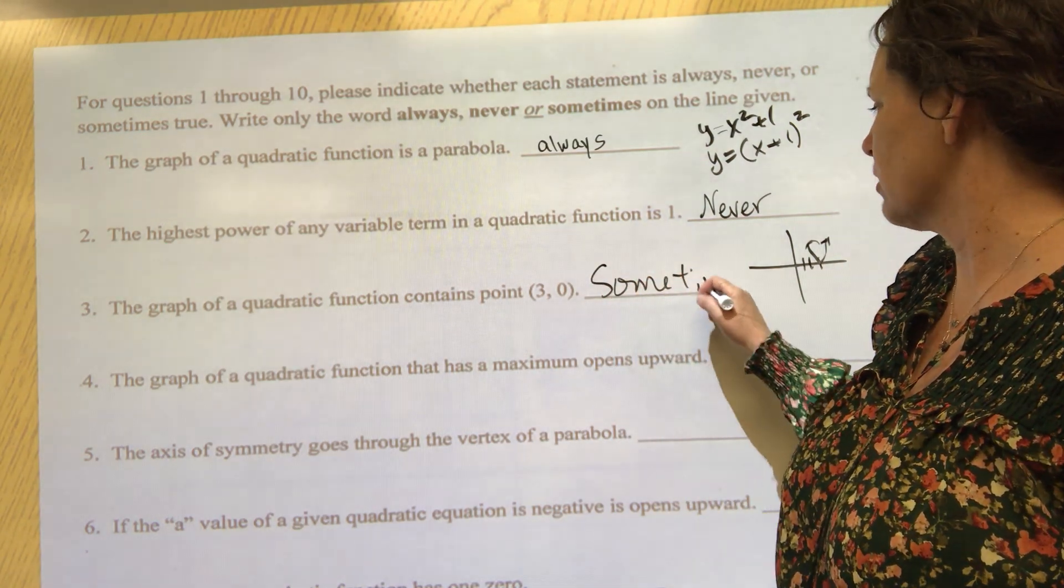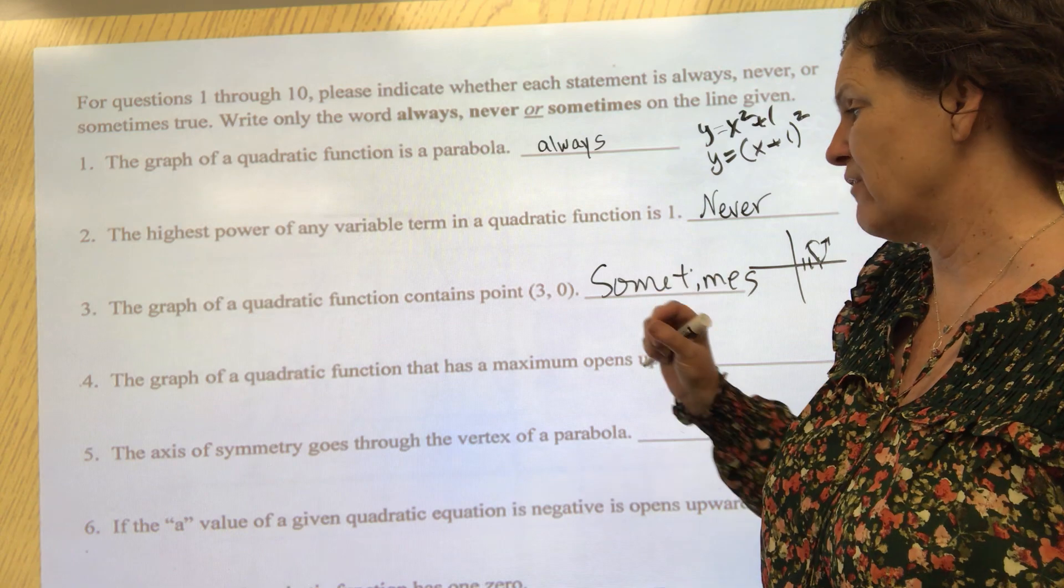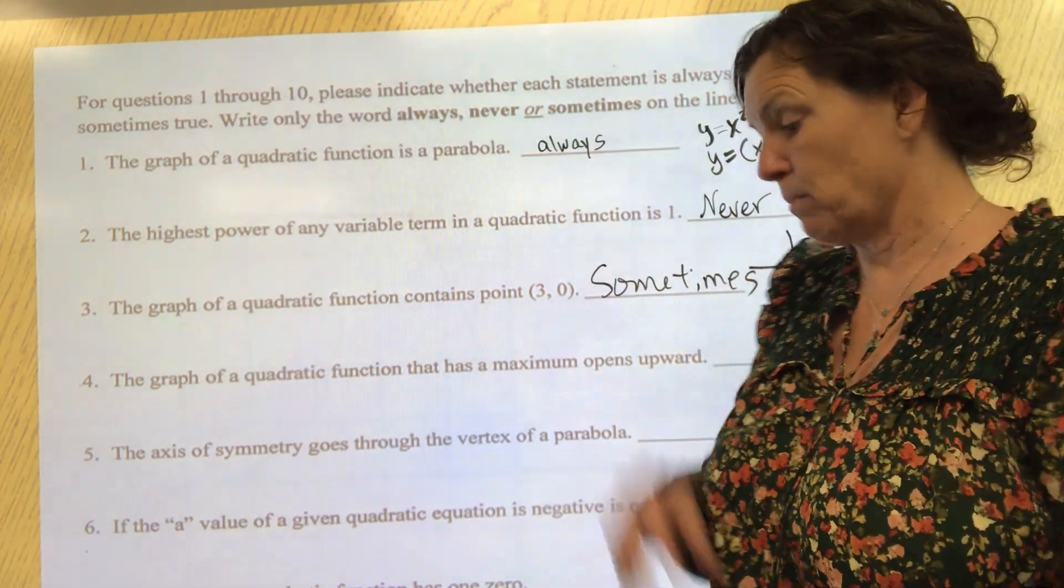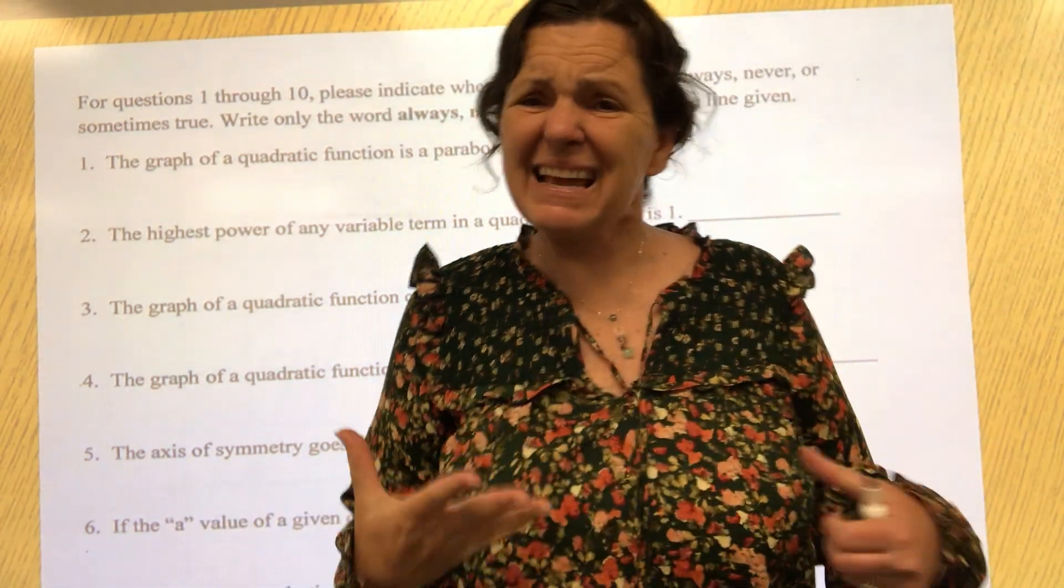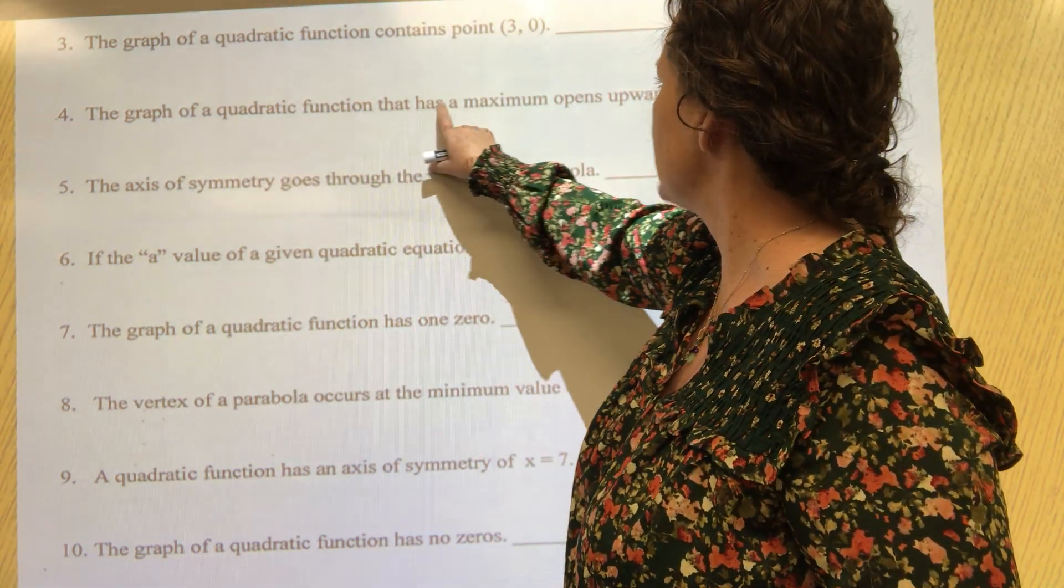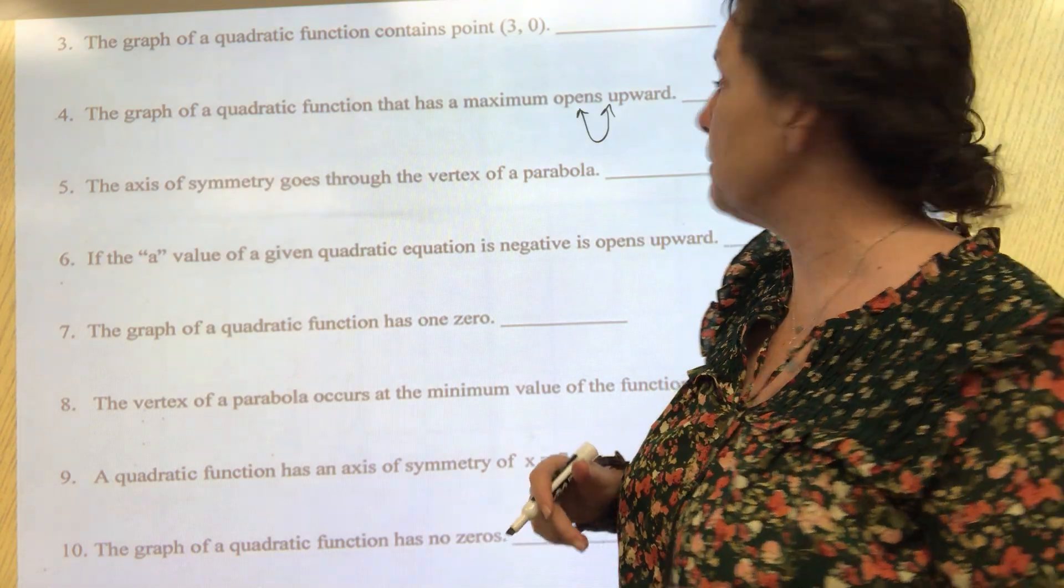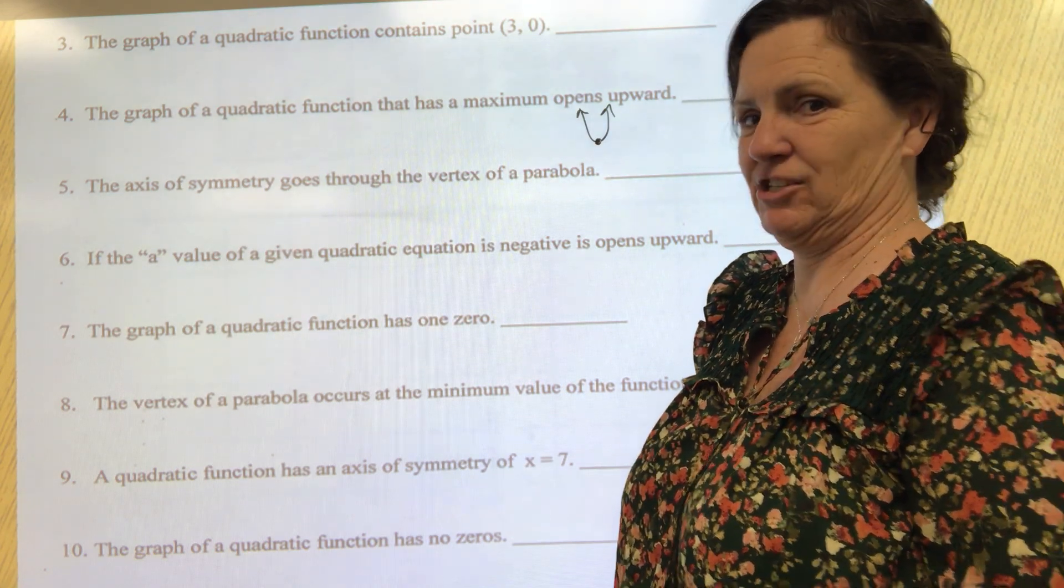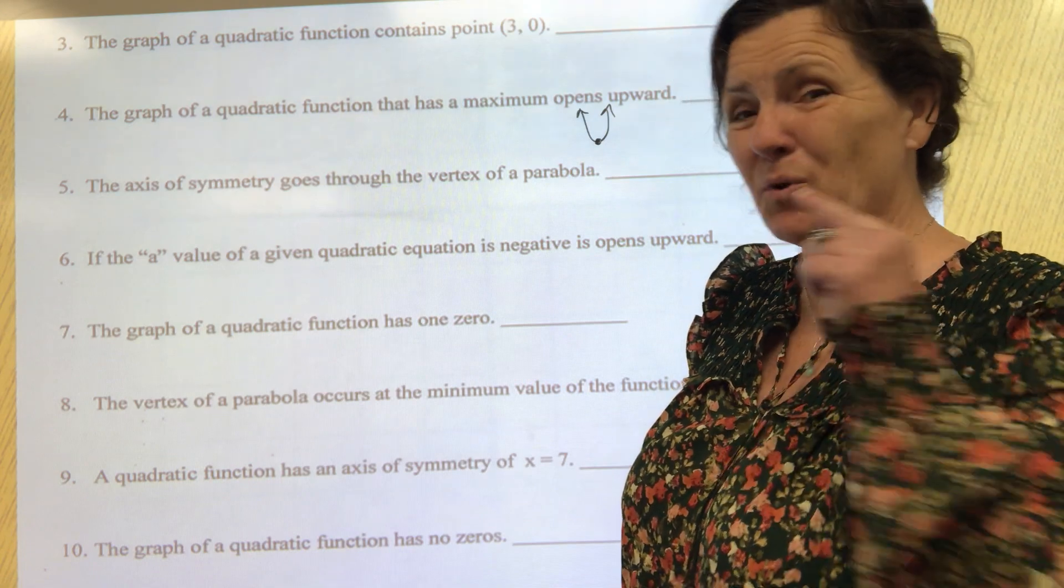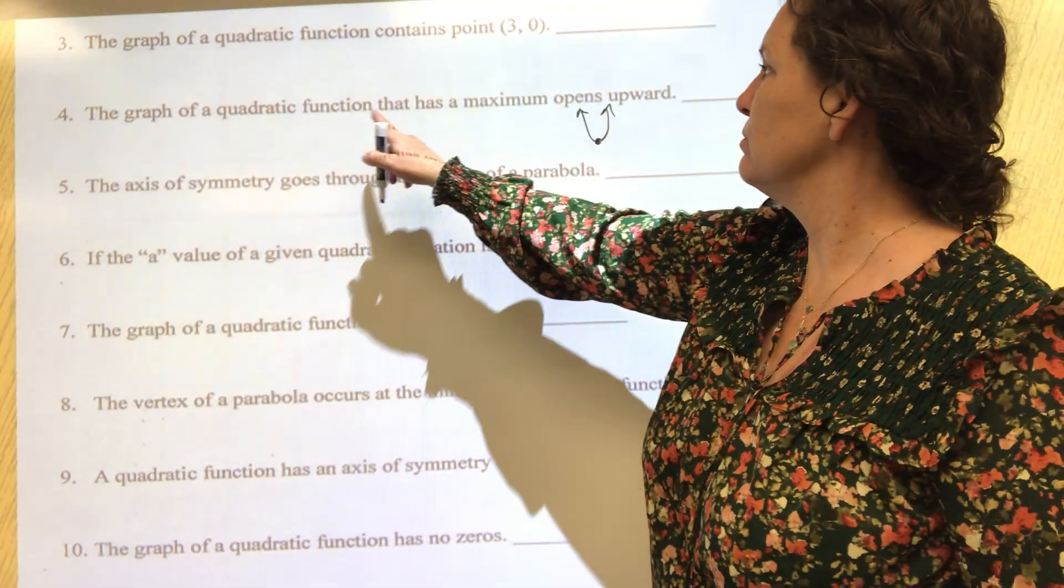The graph of a quadratic function that has a maximum opens upward. I'm a visual person - I need things to be in a visual manner for me, so I'm going to draw a picture. There's a parabola that opens up. Is that a maximum? Is it? Does it have a maximum or is that a minimum? It is a minimum. So that's not true - that's never.